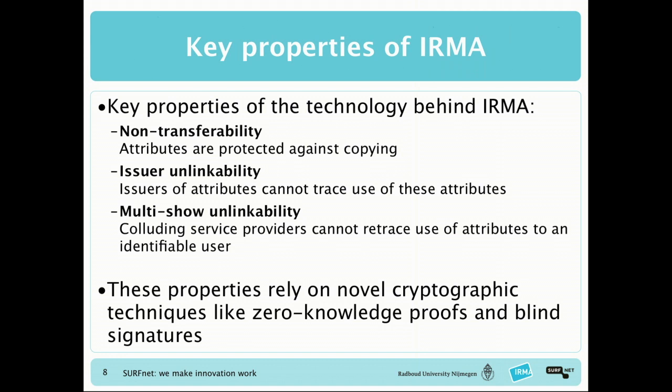Another property is issuer unlinkability. That means the issuer of the identity doesn't know where it gets used. For instance, if your government issues you an identity card and you use it to prove you're over 18 at a hotel, you don't want the government to know about that. In current identity federations, issuer unlinkability is not guaranteed — your home institution knows where you use your identity when logging into a service provider.